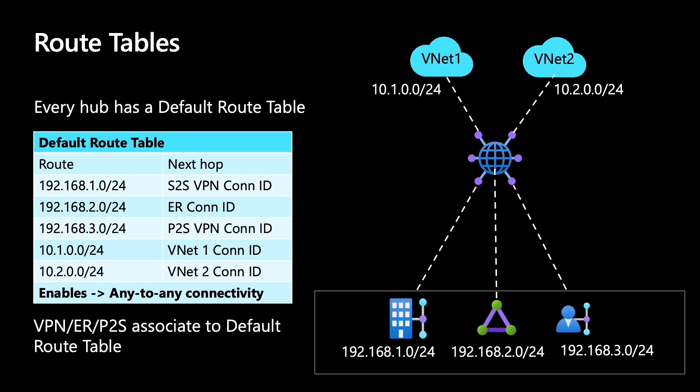There's an important concept we should understand. When I say branches, it means not just the site-to-site VPN site, but also ExpressRoute and user VPN or point-to-site. So VPN, ExpressRoute, and point-to-site are all known as branches in Virtual WAN, and they all associate to the default route table.